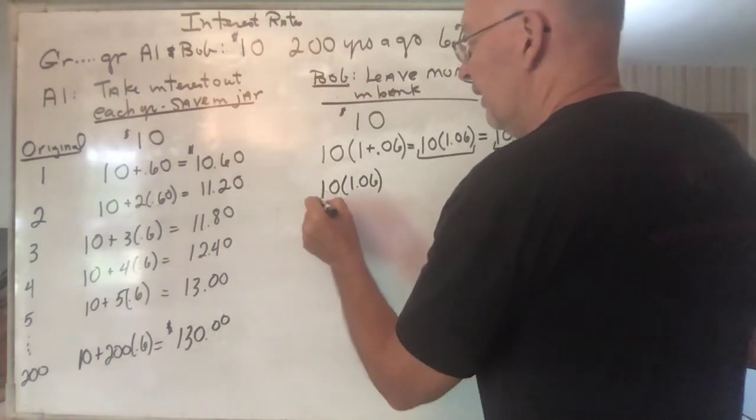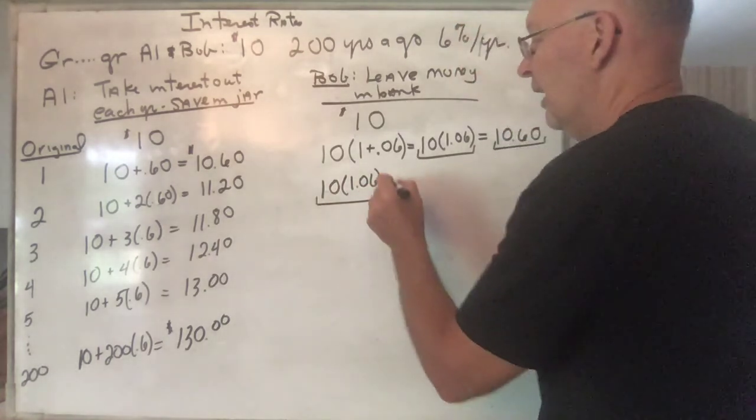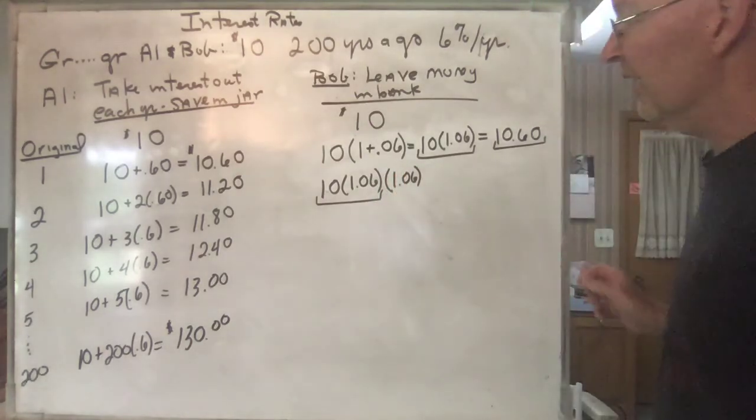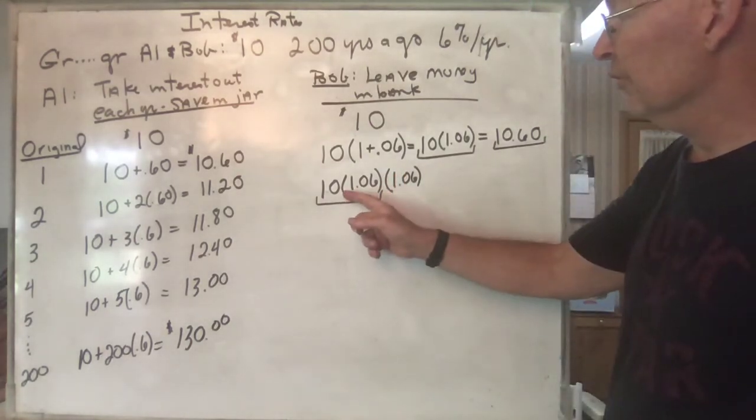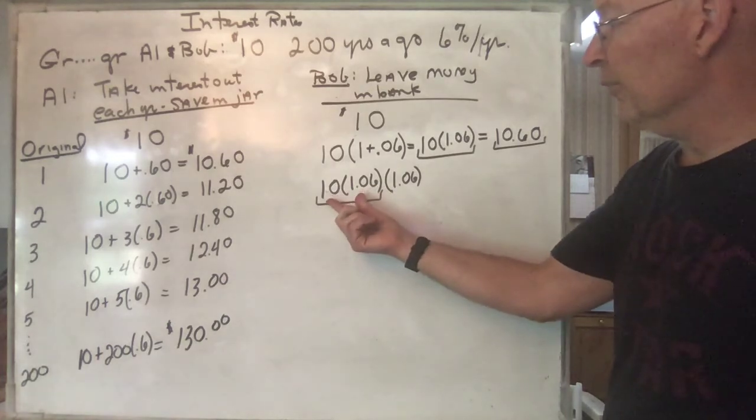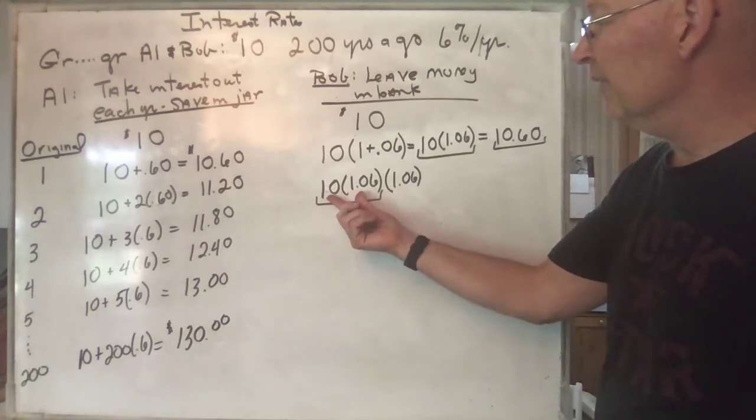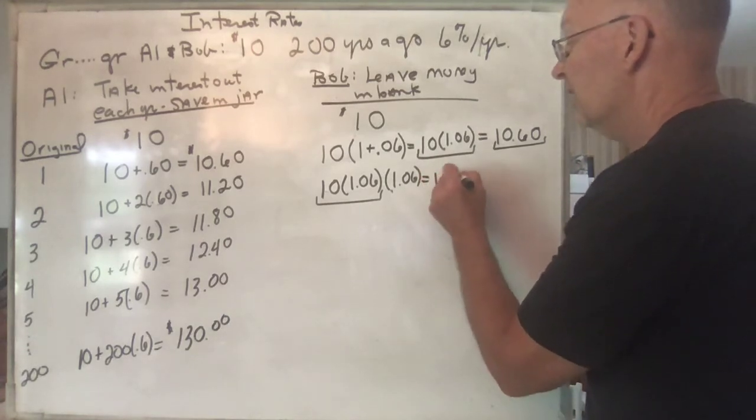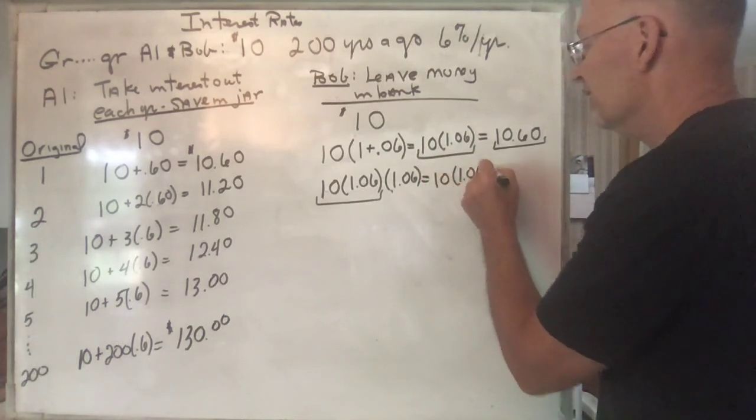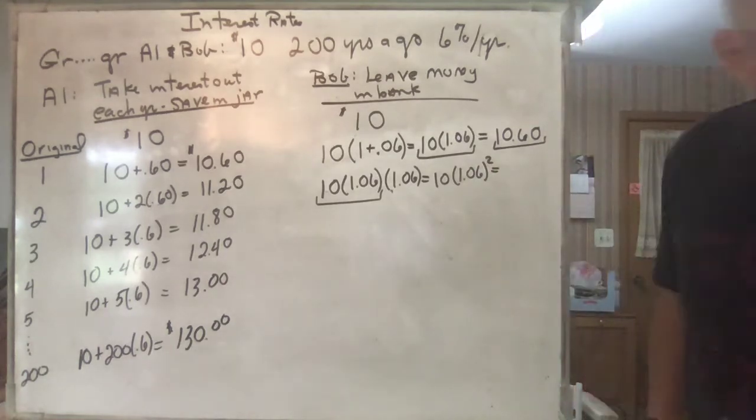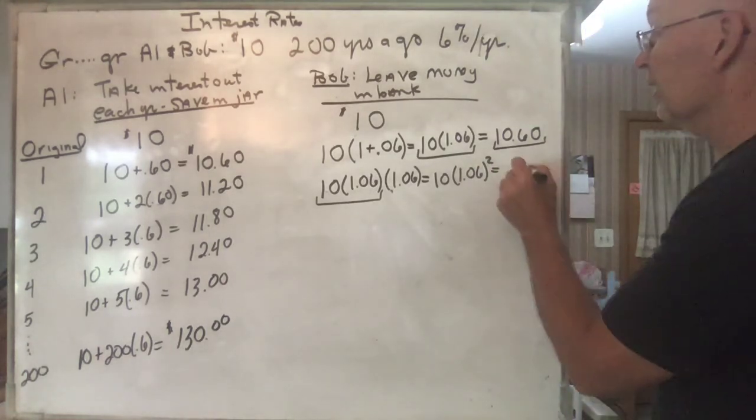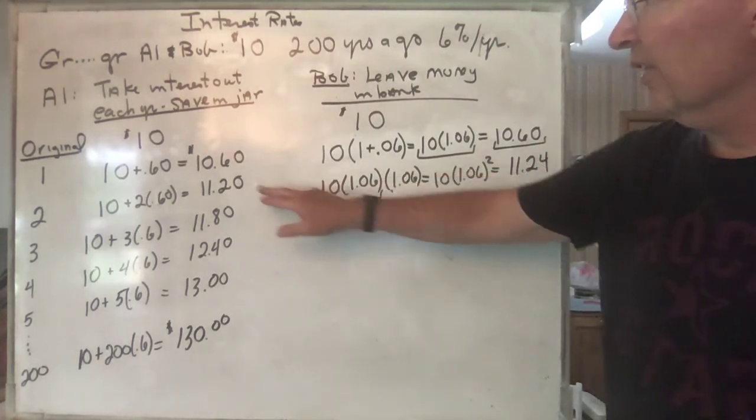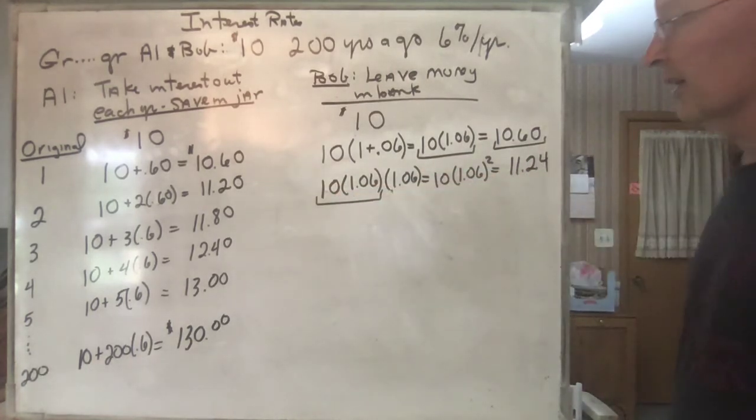Agree that that's how much is in the bank? And now you're going to multiply that by 1.06 at the end of the second year. There's your amount at the beginning of the year, you multiply it by that, and so you end up with 10 times 1.06 squared, which gives you $11.24. See that? So you actually gained an extra 4 cents by leaving that money in the bank.